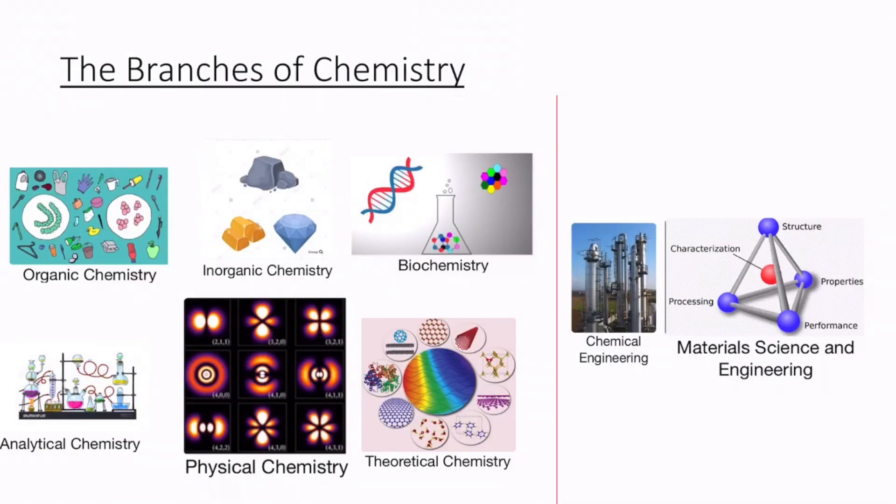Let's talk about the branches of chemistry. The first one is organic chemistry, which studies most carbon-containing chemicals. Some examples include pharmaceuticals, plastics, and fossil fuels. The second one is inorganic chemistry, which focuses on matter that does not contain carbon. Some examples are minerals, metals, and non-metals.